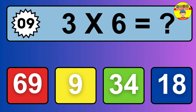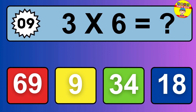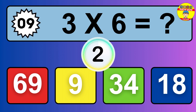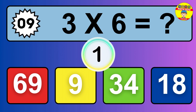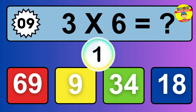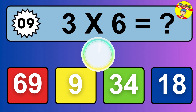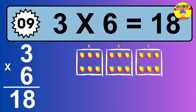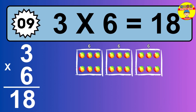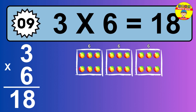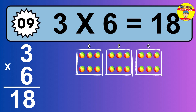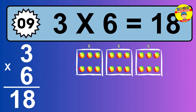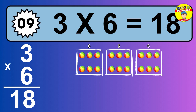Question 9. 3 times 6 equals what? The answer is 3 times 6 is 18. To calculate, we have 3 groups with 6 balls each one. So how many balls do we have? 18 balls.